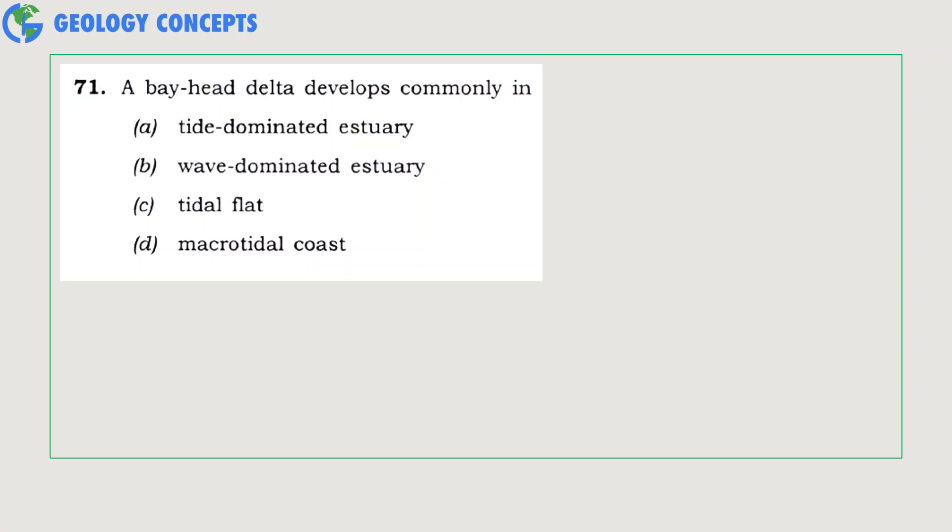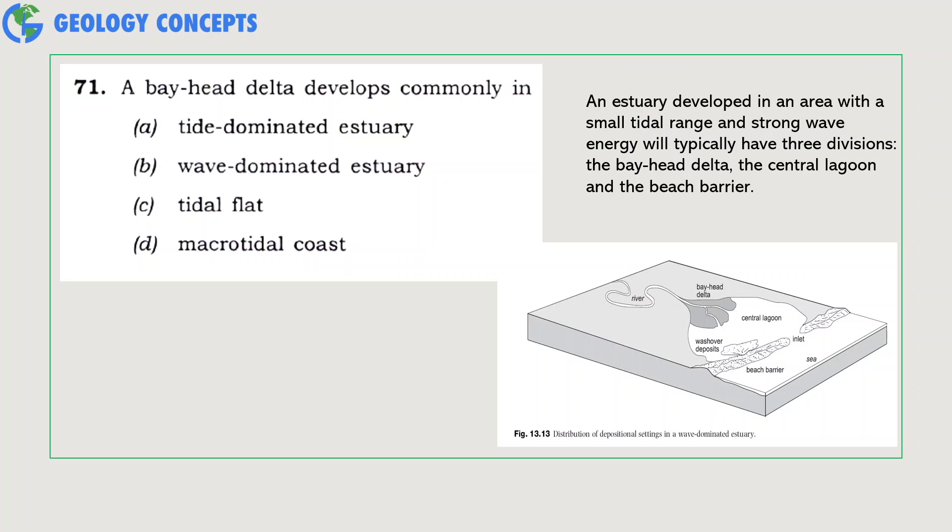A bay-head delta develops commonly in which of the following: tide-dominated estuary, wave-dominated estuary, tidal flat, or macrotidal coast? As you can see from the figure of the wave-dominated estuary, it has three broad divisions: the bay-head delta, the central lagoon, and the beach barrier. So option B is the correct answer, that is wave-dominated estuary.